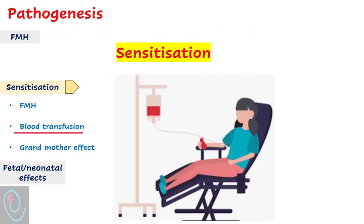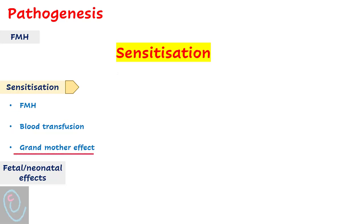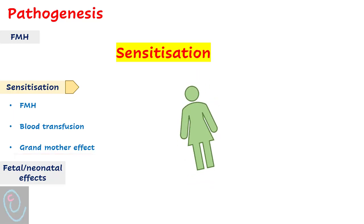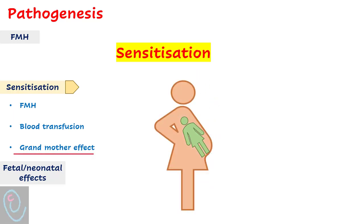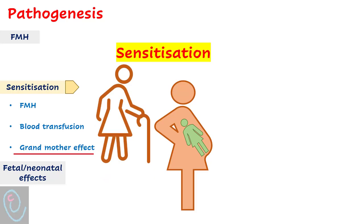Transfusion of RH incompatible blood is another source of sensitization. Additionally, an RH negative woman may have been sensitized as a fetus who received RH positive blood from her mother, leading to sensitization — an effect known as the grandmother effect.